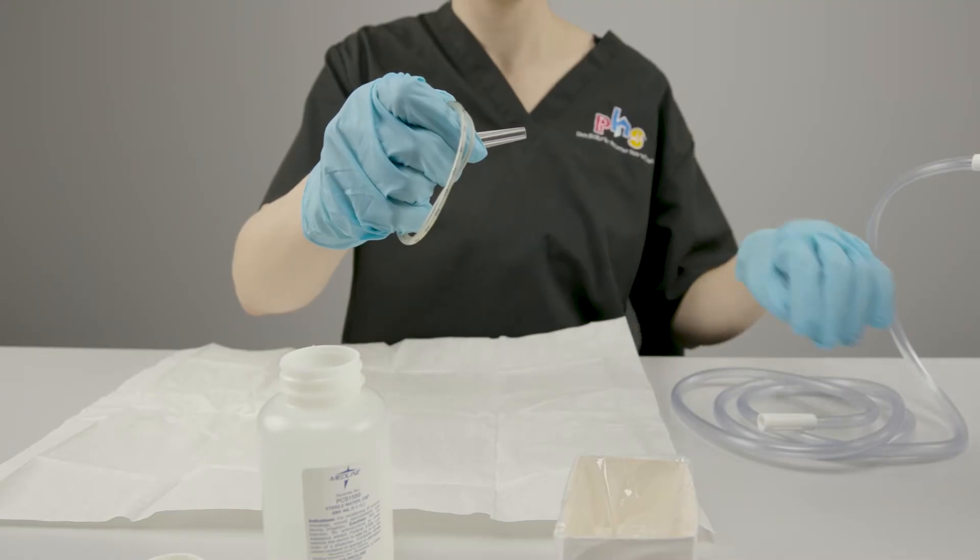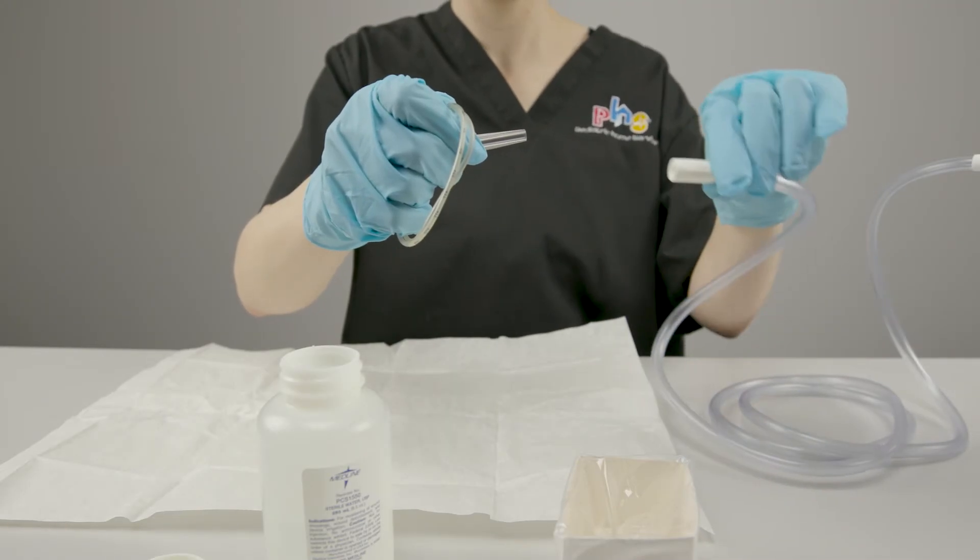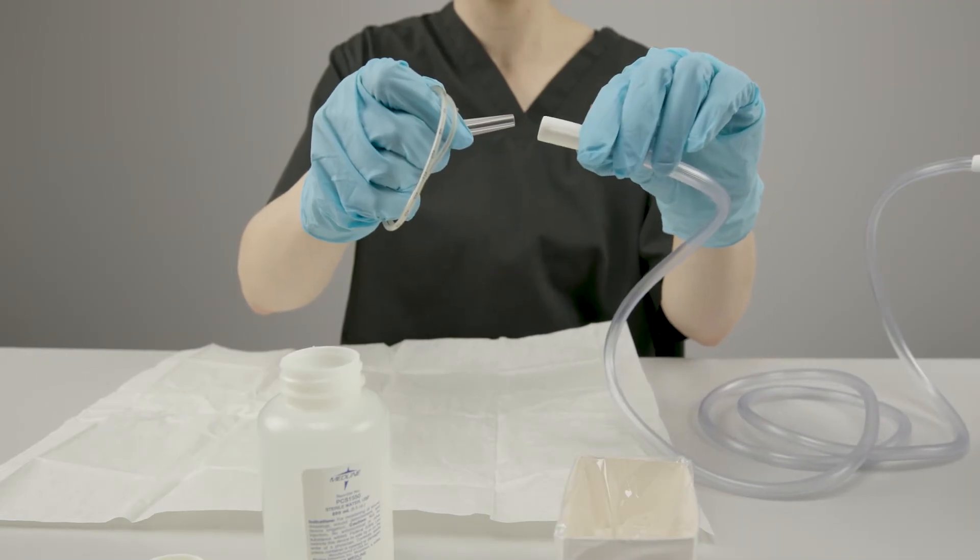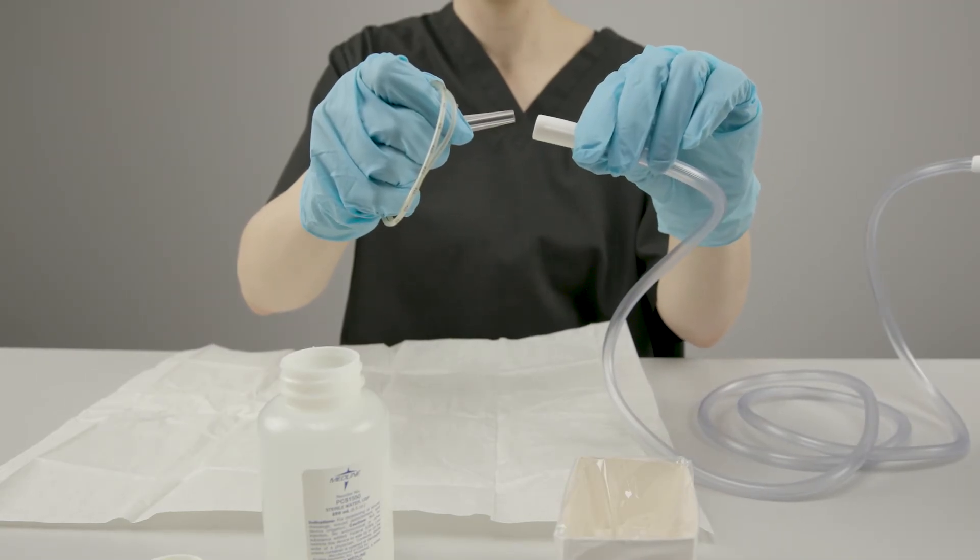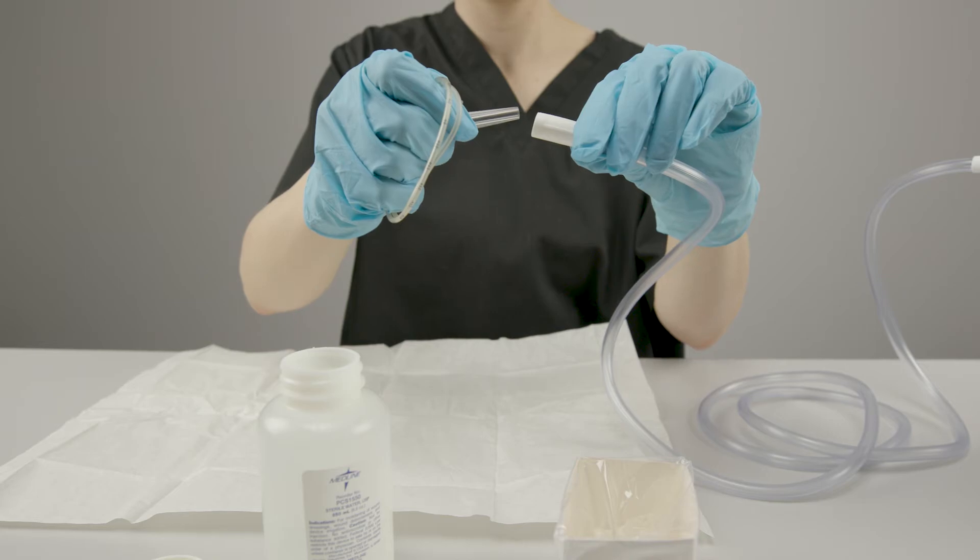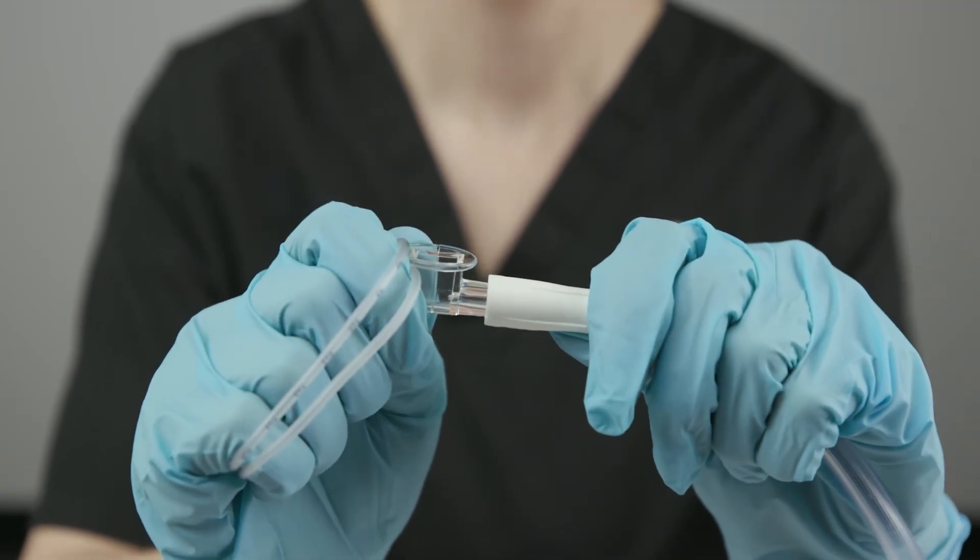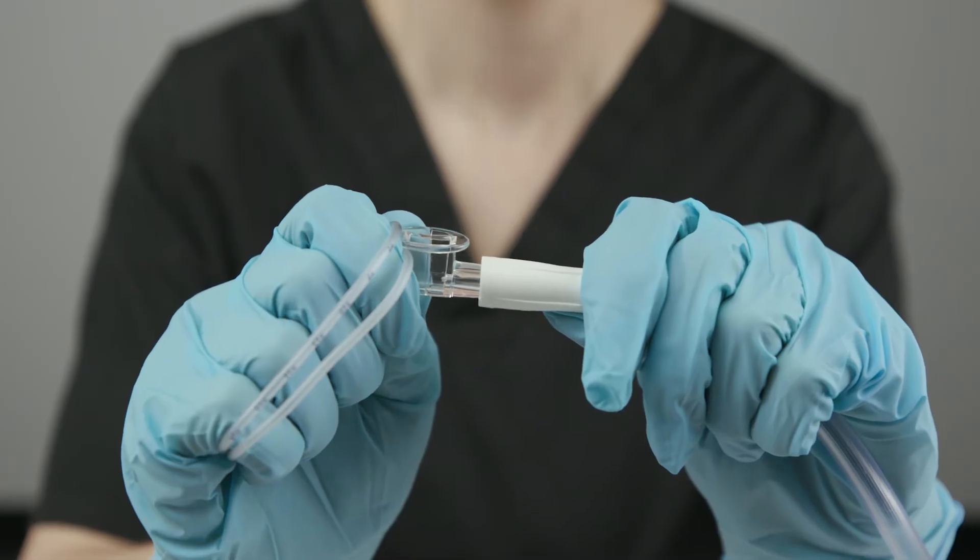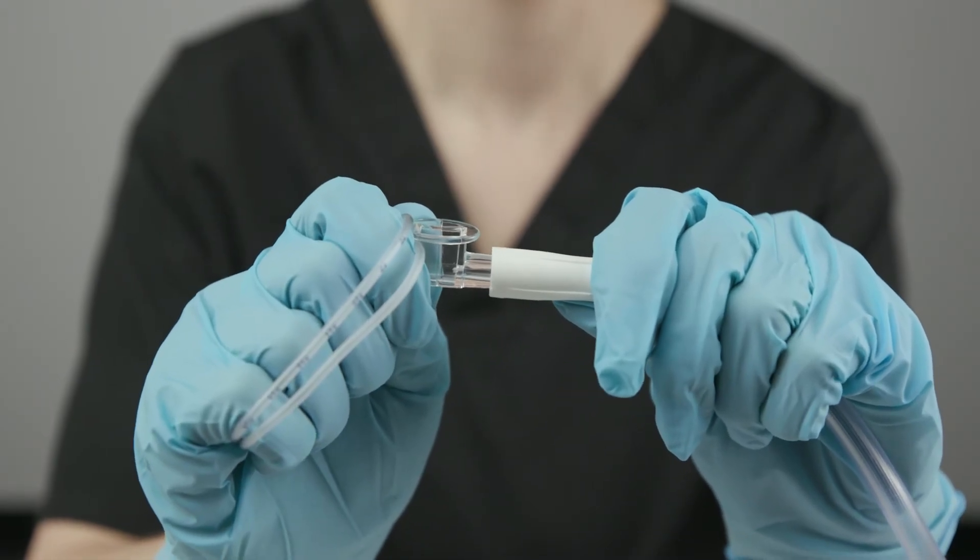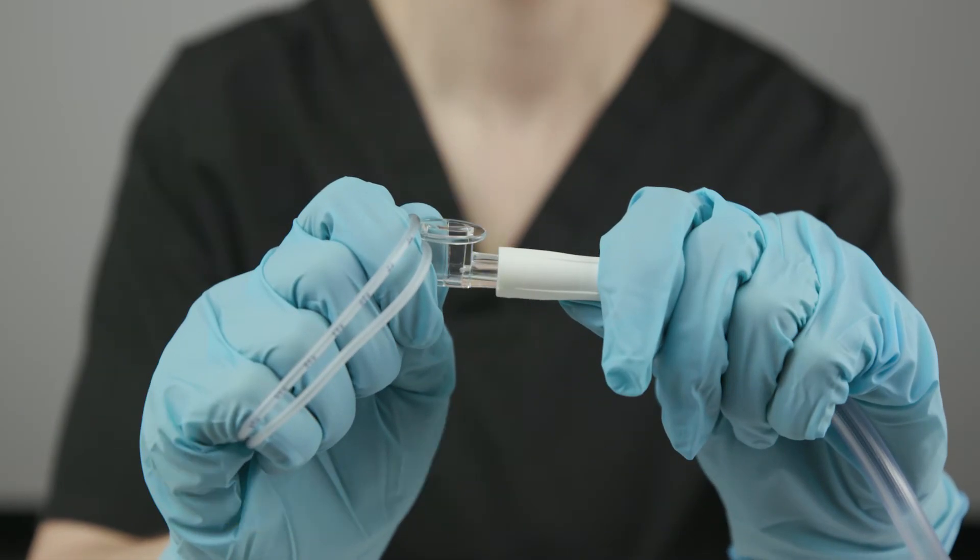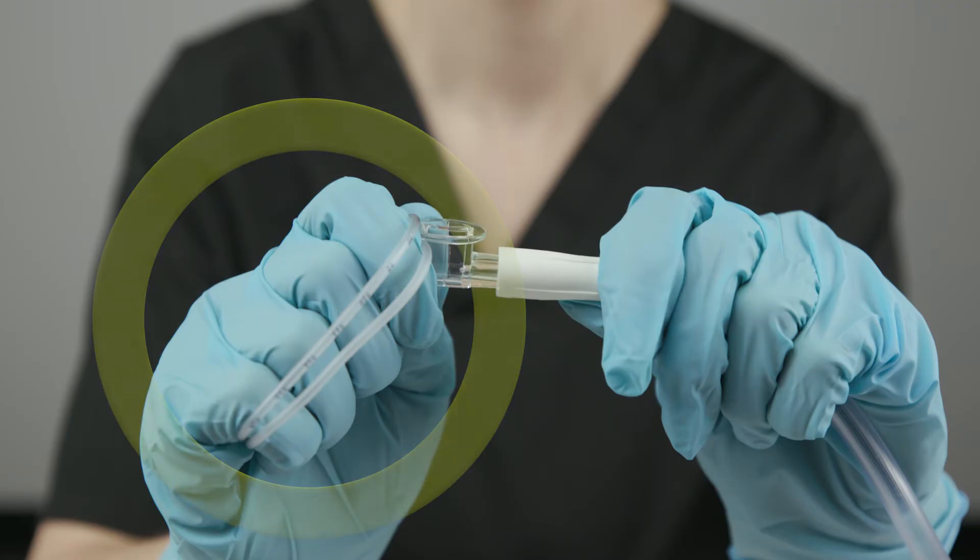Use your non-dominant hand to pick up the suction tubing. Because you touched the non-sterile tubing, your non-dominant hand is no longer sterile. Use your non-dominant hand to push the suction tubing onto the thumb port end of the suction catheter. Keep your dominant hand and the suction catheter sterile.